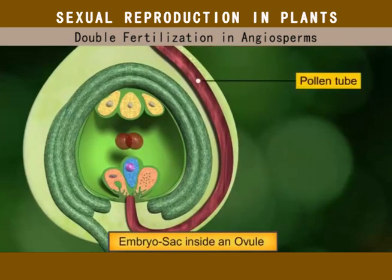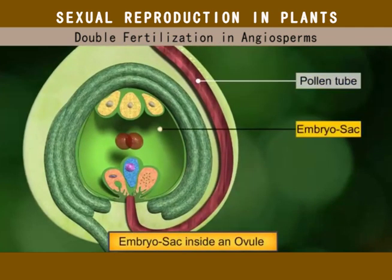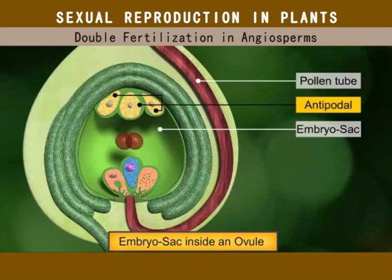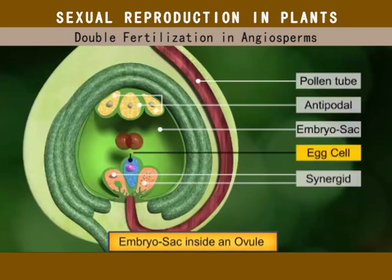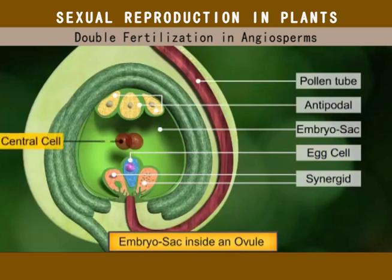In the ovule, the pollen tube encounters the embryo sac containing three antipodals, two synergids, an egg cell, and a central cell with two polar nuclei.